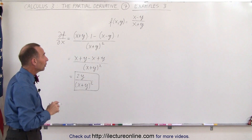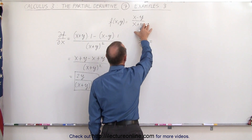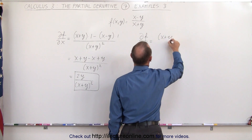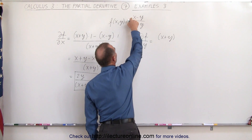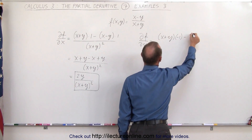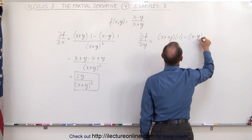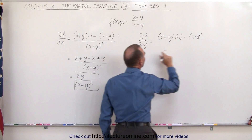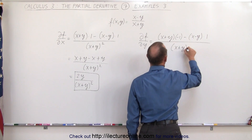Now let's do it again with respect to y. The partial of the function with respect to y is equal to: we take the quotient rule, that means we take the denominator, x plus y, times the derivative of the numerator with respect to y. So x becomes a constant, the derivative of x therefore is 0, and the derivative of minus y is minus 1. Minus the numerator, x minus y, times the derivative of the denominator with respect to y — the derivative of x is 0, the derivative of y is 1 — all divided by the denominator squared, x plus y quantity squared.